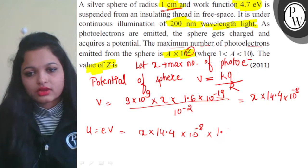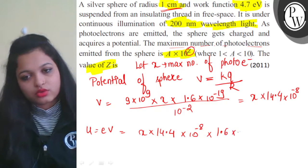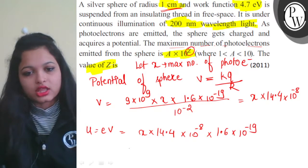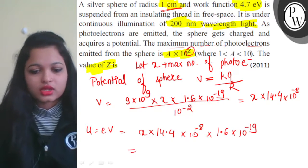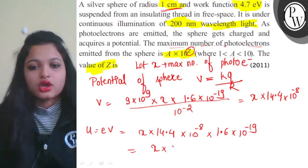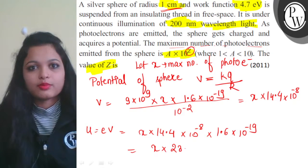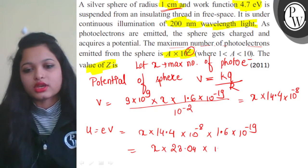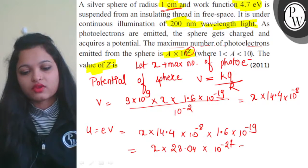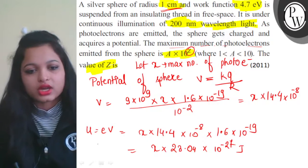This gives us 11.6 × 10^-17 on one side. So we have x × 23.04 × 10^-27 joules.